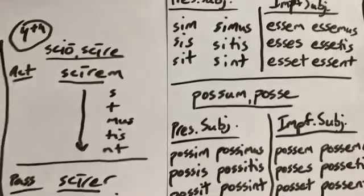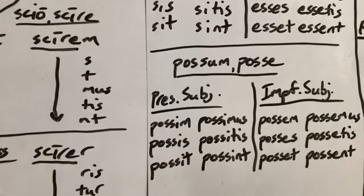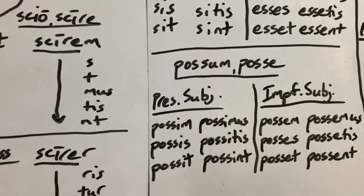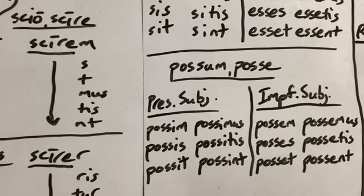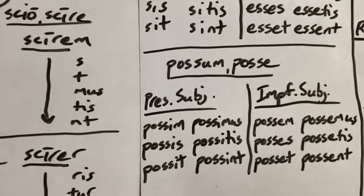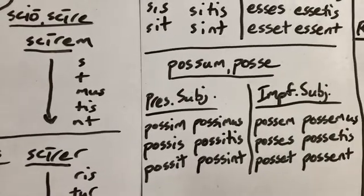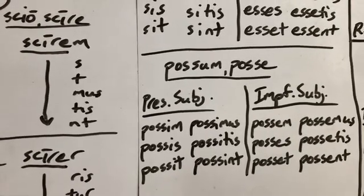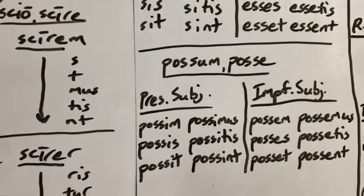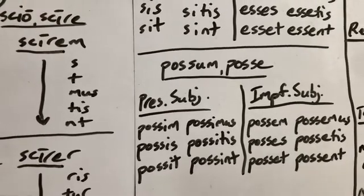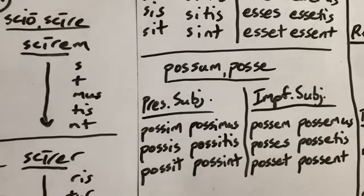And then 'possum,' being a compound of 'sum.' The present subjunctive: possim, possis, posset, possumus, possetis, possent. And the imperfect — you take the infinitive and put your endings on. So those are the charts for Chapter 29. They're pretty straightforward.